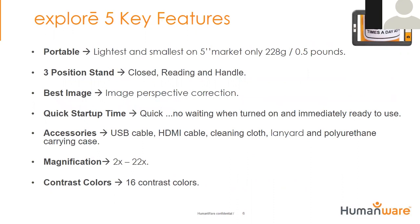Key features of the Explorer 5: It's a very portable device — the lightest and smallest on the 5-inch market — only 0.5 pounds, 228 grams. There are three positions for the stand: closed, reading, and handle. Best image quality with image perspective corrections so text is always straight on screen. Quick start-up time — the device is ready to use immediately. Accessories included: a USB cable, and starting January of next year an HDMI cable will be added. Also included: a cleaning cloth, lanyard, and polyurethane carrying case. Magnification from 2x to 22x, and more than 16 contrast color options.